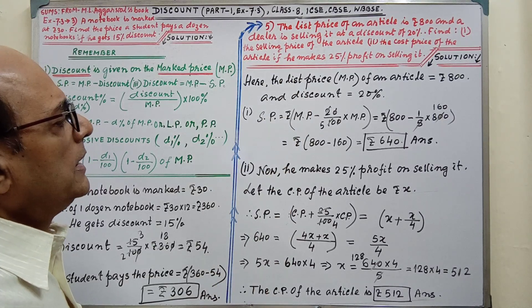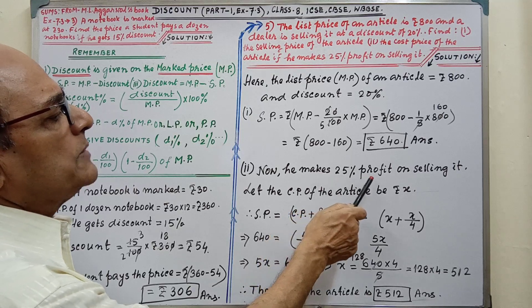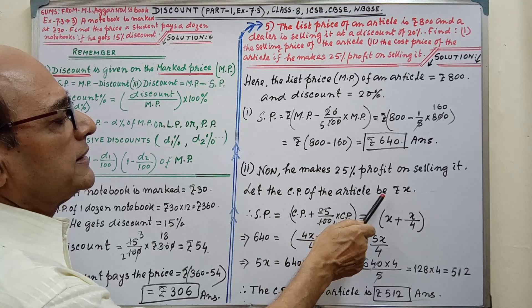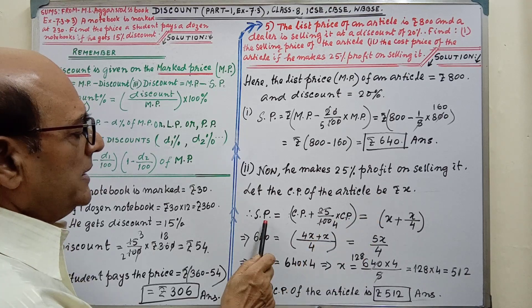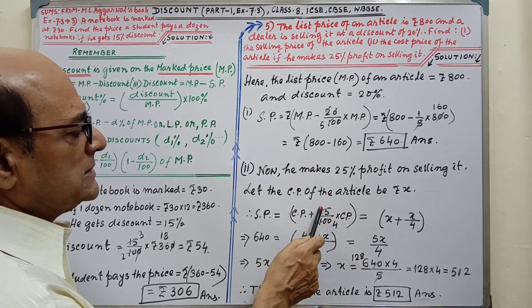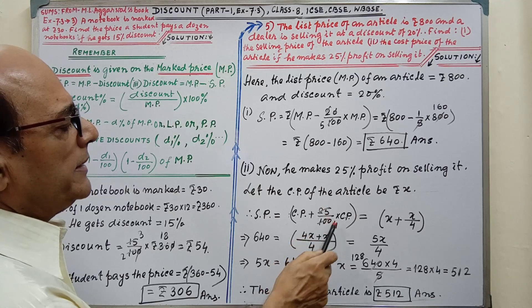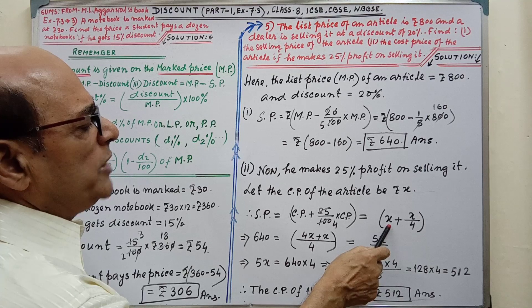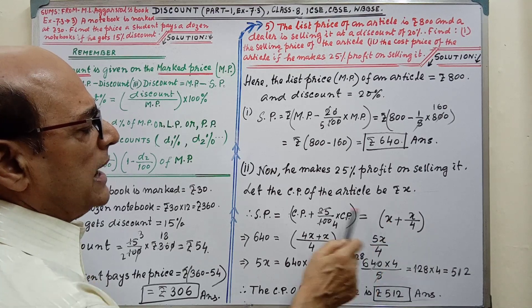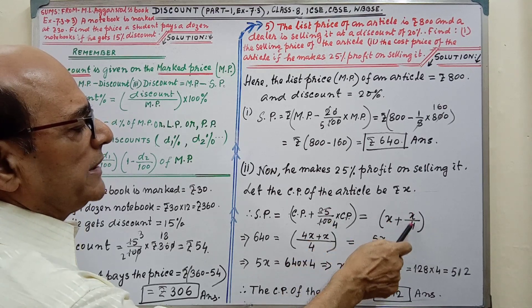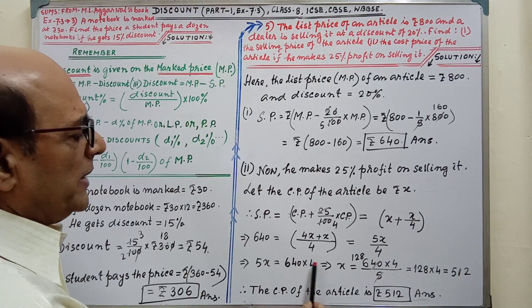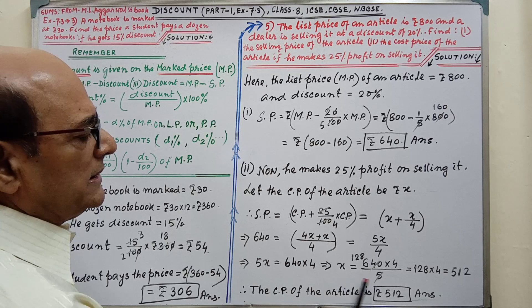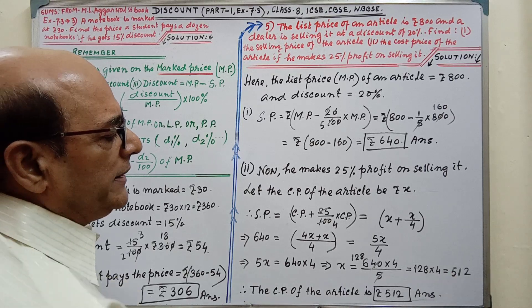Second part: Now he makes 25% profit on selling it. Let the CP of the article be Rs X. Therefore SP = CP + (25/100) × CP. That is, CP we have considered X, and by calculation it is coming X + X/4.